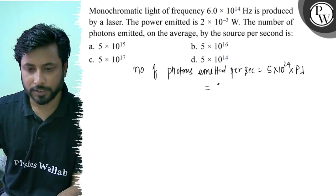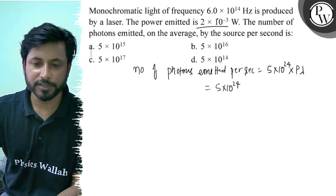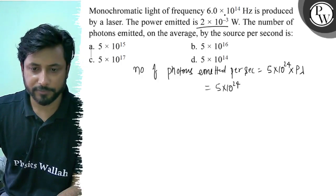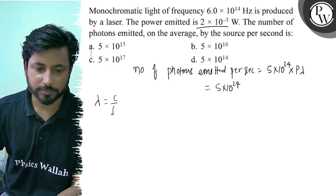So this will be 2 × 10^-3, and lambda we need from frequency. We can replace lambda using c by f.